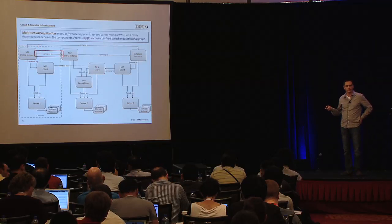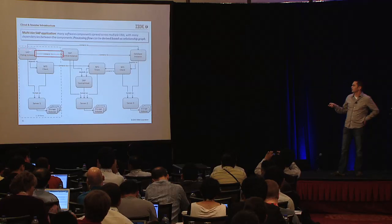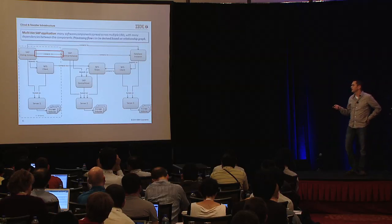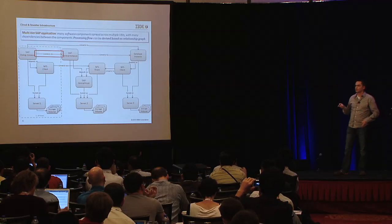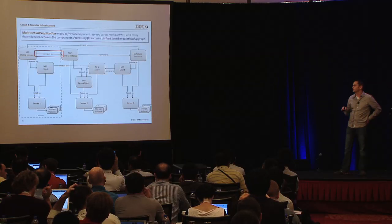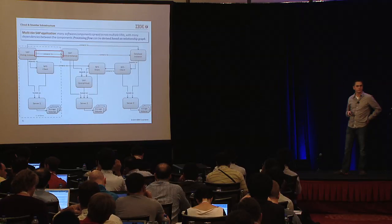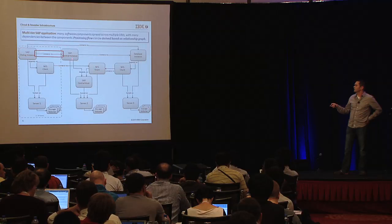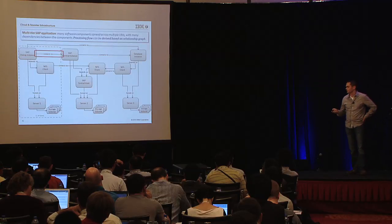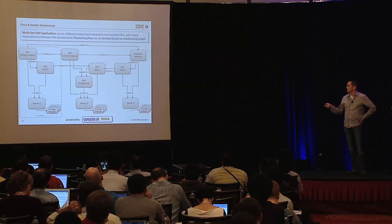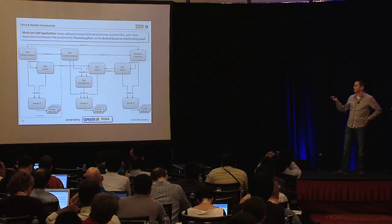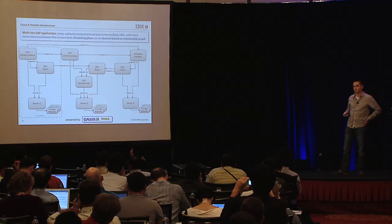Another important thing in such a model are connections between components. Since the dialogue tier is scaling — I can have many dialogue instances — I need a way to react to scaling events. In the SAP case, I have to update profile configuration data on the central host so that other components know about the new instance. This connection has signaling semantics attached. This is powered by OASIS Tosca — a model built by SAP and a company called Venomic, and we can run it in our orchestrator today.